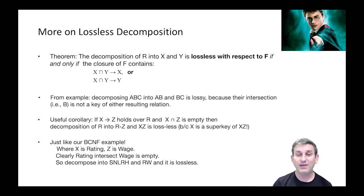From our example of the previous slide, decomposing ABC into AB and BC was lossy because their intersection was B and B was not a key of AB or BC. B had duplicate twos in it, and because it wasn't a key of either side, it gave us this multiplicative join where the twos turned into four copies instead of two copies.